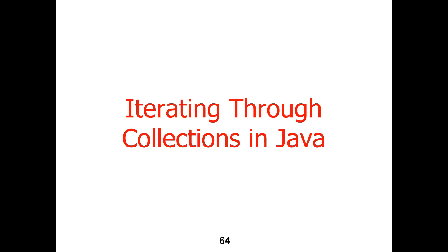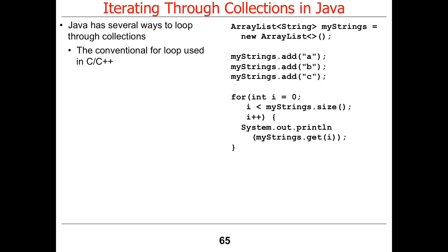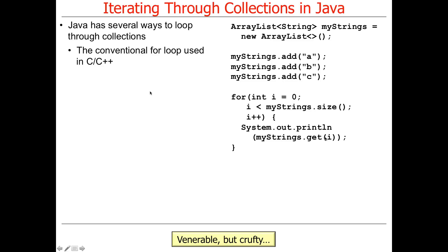The last topic is about different ways to iterate through collections in Java — there are four ways. The first way uses just a conventional loop, which is what you're probably most accustomed to from 101 and 201. You make a list of Strings, add some elements, and then for i equals zero, i less than the size of the ArrayList, print out each element one at a time. That's pretty canonical, but it's kind of boring.